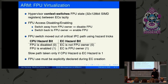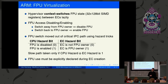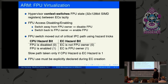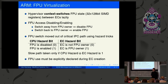FPU state is interesting because it's large — on ARM it's 32 128-bit words, which is 512 bytes. You do not want to switch this on every VM exit or context switch, so we switch the FPU lazily. The thread with its state currently in the FPU is called the FPU owner. Whenever another thread wants to access the FPU, we save the owner's state and give it to the other thread. This means the hypervisor must disable the FPU when switching away from the owner to trap subsequent accesses, and re-enable it when switching back.